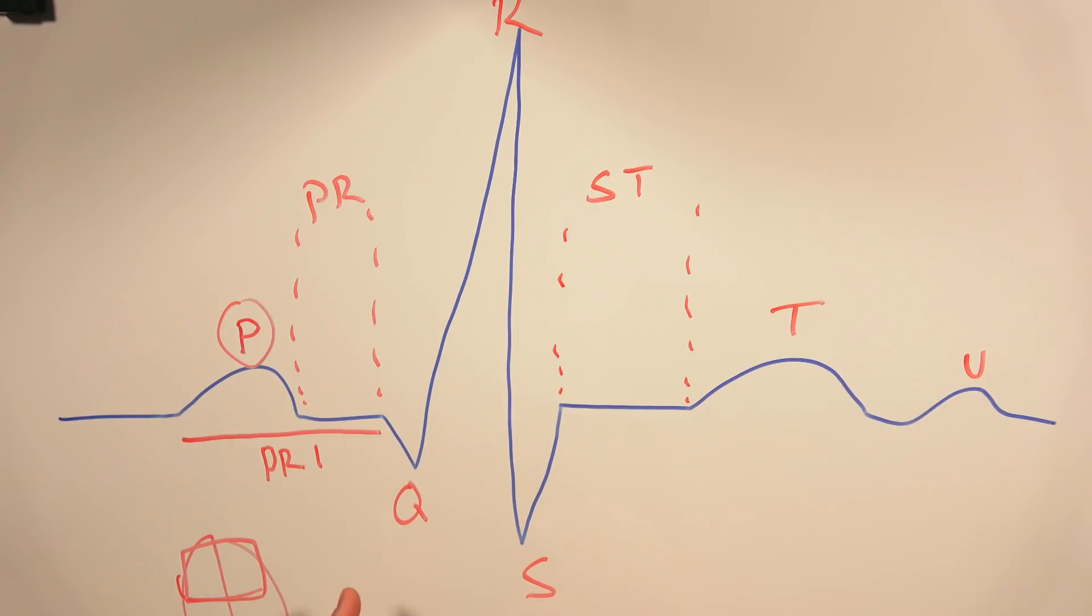Okay, then we move on and we have the QRS complex. What the QRS complex represents is ventricular depolarization. So this is when our ventricles - here's our little heart - the QRS complex is ventricular depolarization. As those ventricles are really squeezing, electrically that's depolarization. Mechanically, that's where it's starting to really squeeze and get all that blood out.